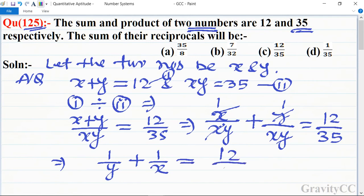This is the required answer according to the question: find the sum of their reciprocals. The sum of reciprocals of x and y is 12/35, so option c is the correct answer.